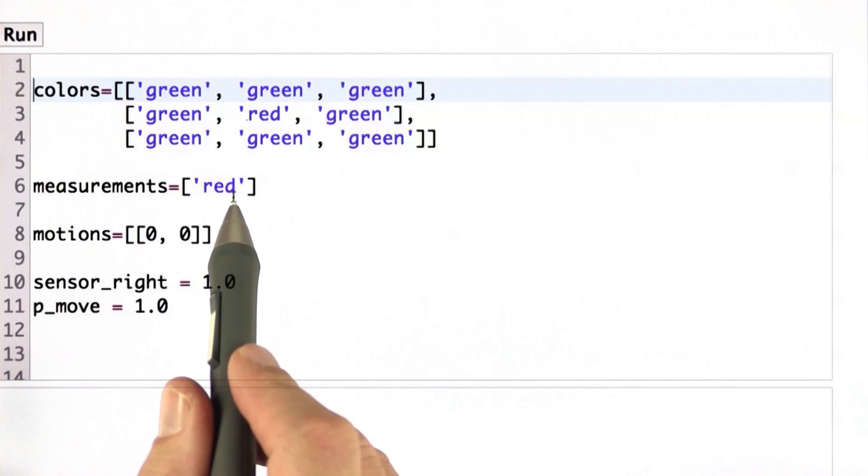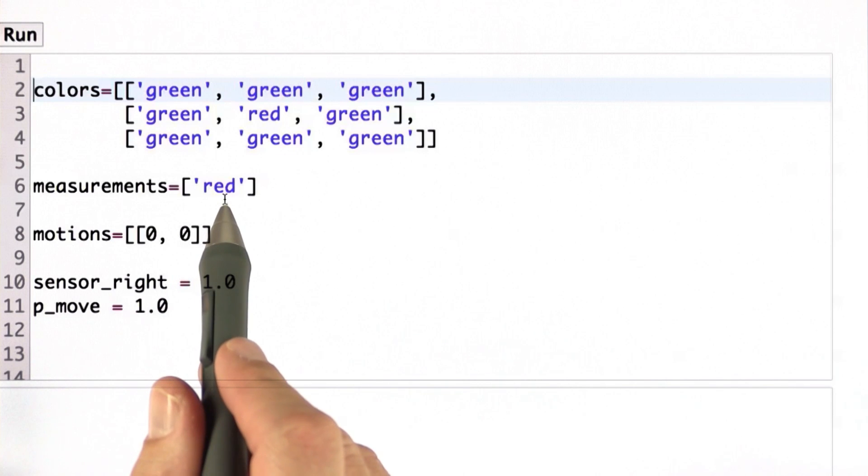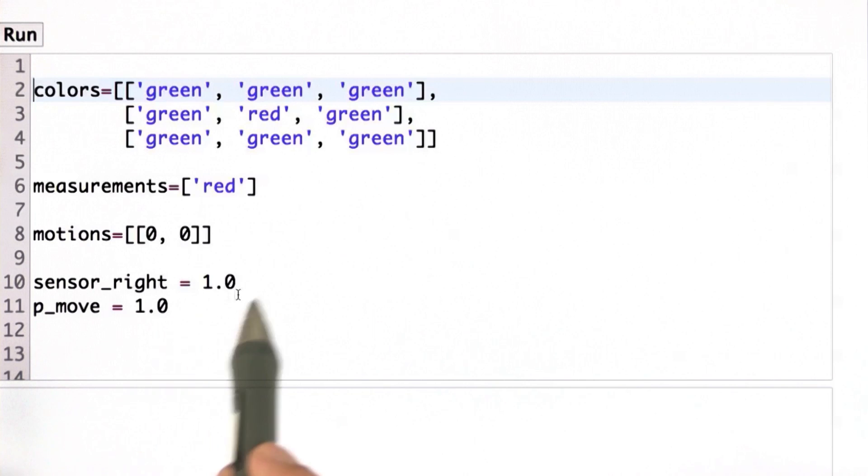We have a motion vector and a measurement vector. We start with the motion. This one says stay in place, and this one says we're going to observe red. And additionally, I give you two more variables called sensor_right and p_move. Sensor_right is the probability that your sensor measurement is correct. In this specific instance, I set it to 1.0, which means the sensor value is always correct. P_move tells you at what probability the motion is executed correctly. Right now it's 1.0, it's always correct. If it's a smaller value, then the motion might fail. And when it fails, our robot won't move at all.